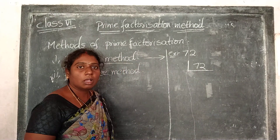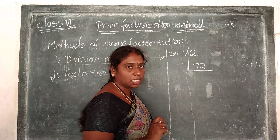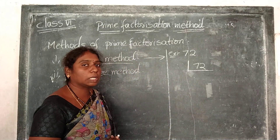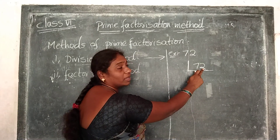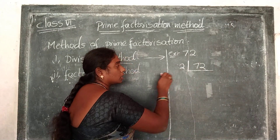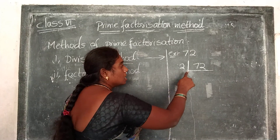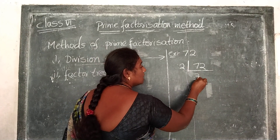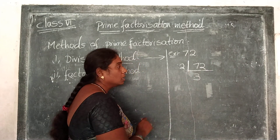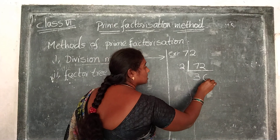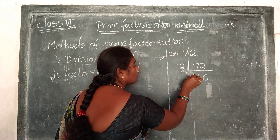What is the divisibility test for 2? When the units place value is an even number, then the total number is divisible by 2 — that is the divisibility rule for 2. Here the units place of 72 is 2, which is an even number, so it is divisible by 2. So I am going to take 2 here. 72 divided by 2 gives 36. So 2 times 36 equals 72.